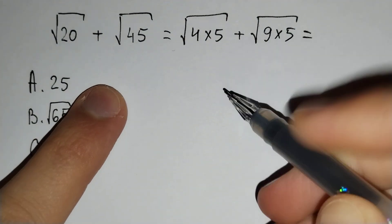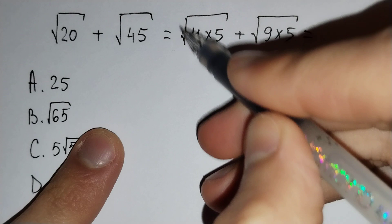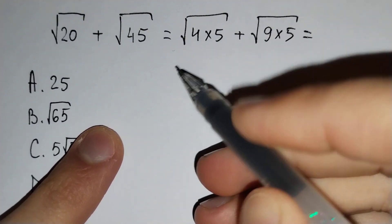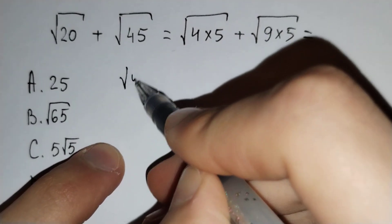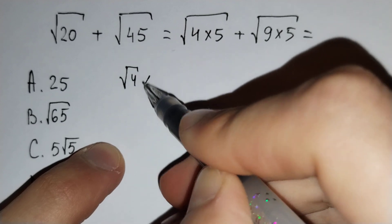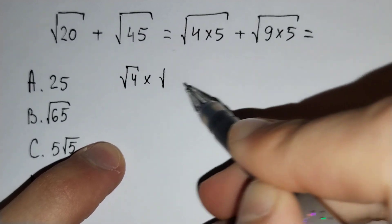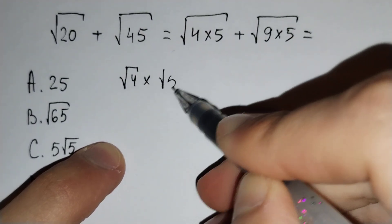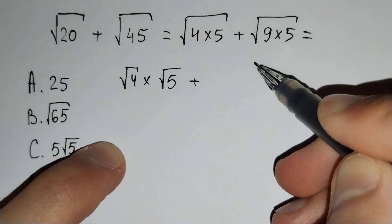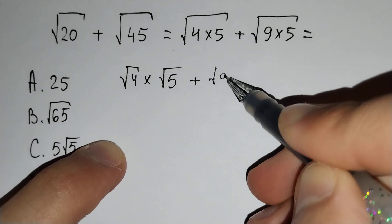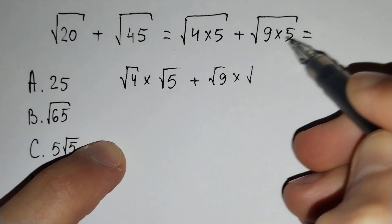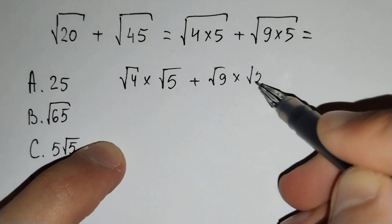Then, the square root of 4 times 5 is equal to the square root of 4 times square root of 5, plus the square root of 9 times square root of 5.